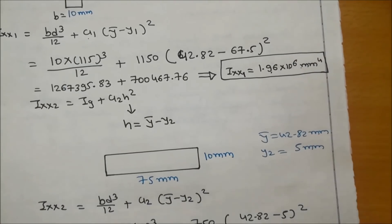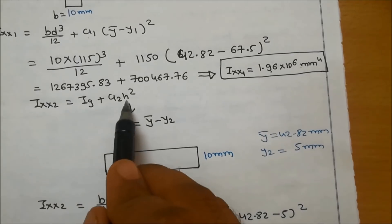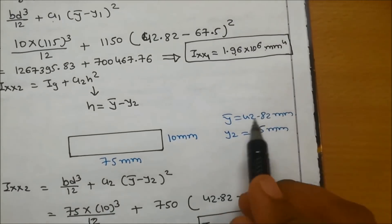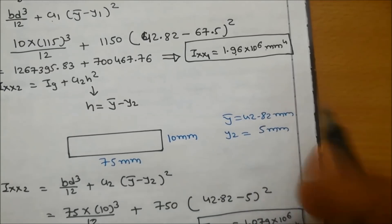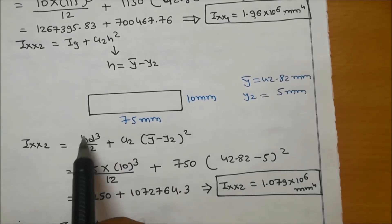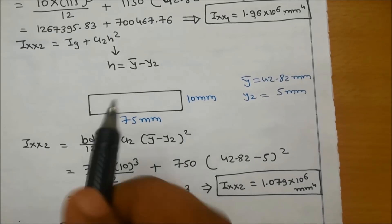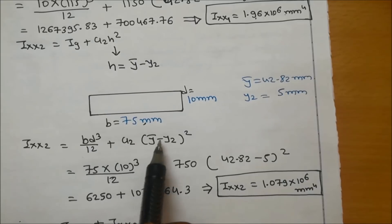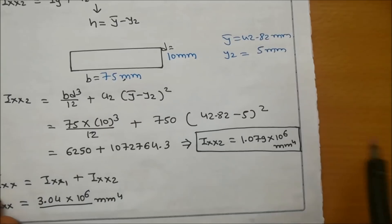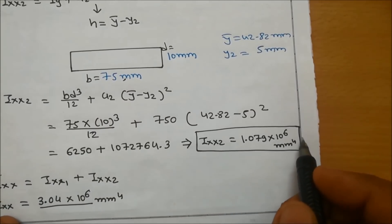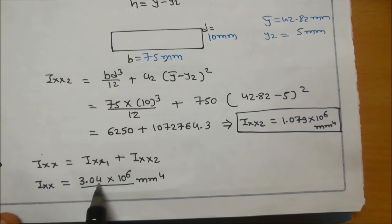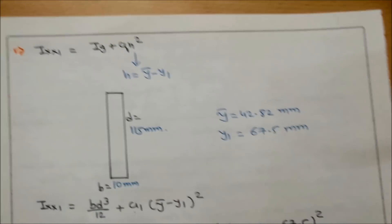Similarly, for the second part, Ixx2 equals Ig plus A2·H square where H equals Y-bar minus Y2. The second part dimensions are 75 mm and 10 mm, Y-bar is 42.82 mm, and Y2 is 5 mm. So Ixx2 equals (75 × 10³)/12 plus 750 × (42.82 − 5)², giving Ixx2 equal to 1.079 × 10⁶ mm⁴. Therefore total Ixx equals Ixx1 plus Ixx2, which equals 3.04 × 10⁶ mm⁴.